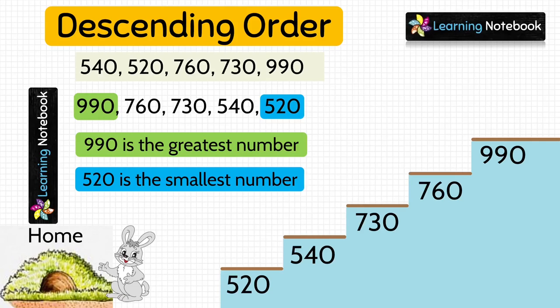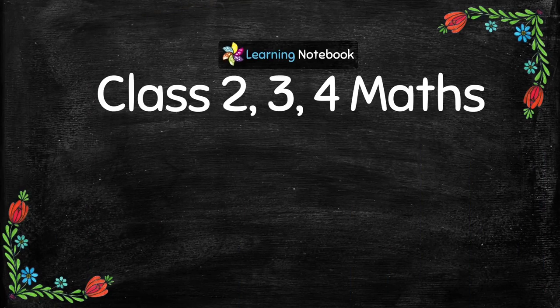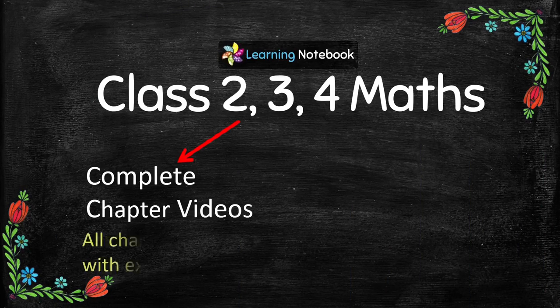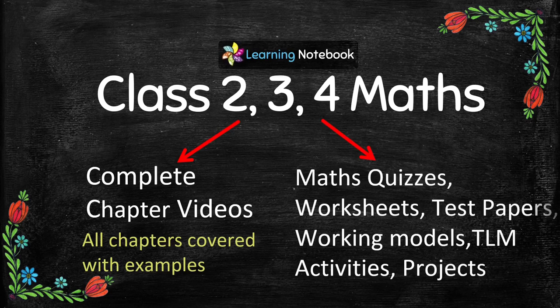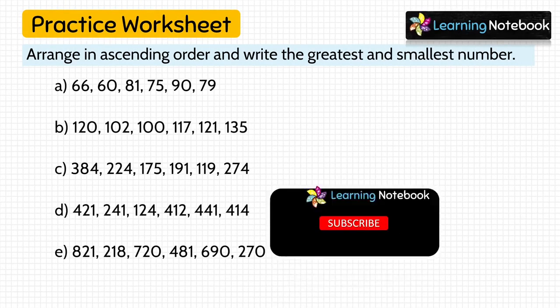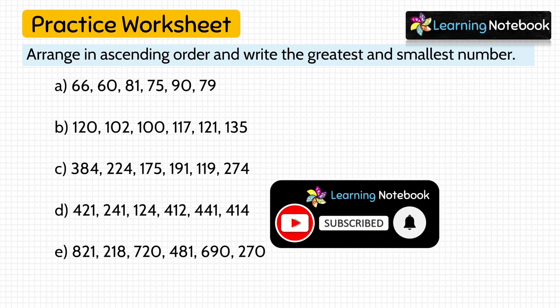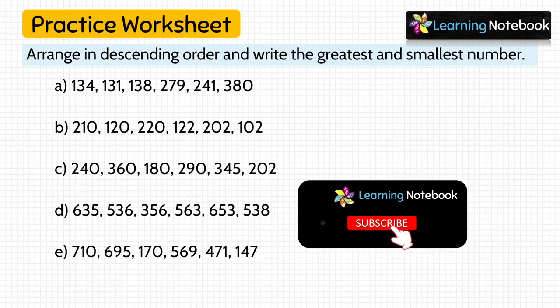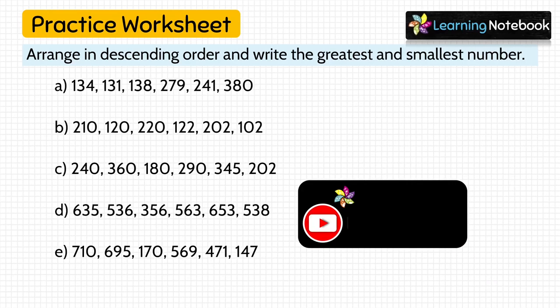Now I am sure you have understood the meaning of descending order and how to arrange numbers in descending order. We have made videos on every chapter of class 2, 3, and 4 mathematics, including quizzes, worksheets, test papers, working models, activities, and projects. Check out our channel Learning Notebook. I am giving you a worksheet for practice — do solve these questions and mention your answers in the comments. Thanks for watching, see you in the next video, bye-bye.